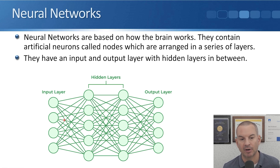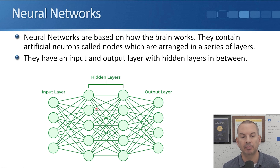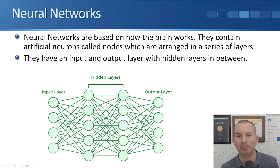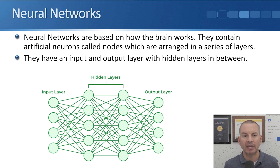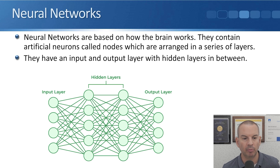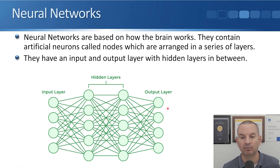It's got inputs coming into it which is similar to the dendrites of a neuron, and it's got outputs going out which are similar to axons. So it's not the same as a human brain but it was inspired by it. They have an input layer and output layer with hidden layers in between, where you give it some data and then the output layer generates the final result, and all of the intelligence of how it gets to that final result is in the hidden layers.